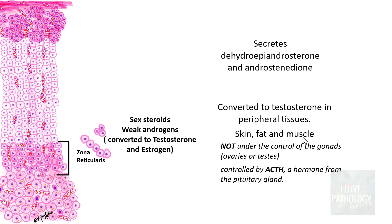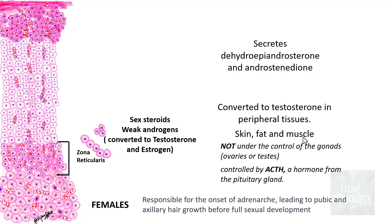That is the key difference between gonadal androgens versus adrenal androgens. In females, these sex hormones are responsible for the onset of adrenarche, which means pubic and axillary hair growth before full sexual development. Full sexual development then takes place with the help of gonadal hormones.